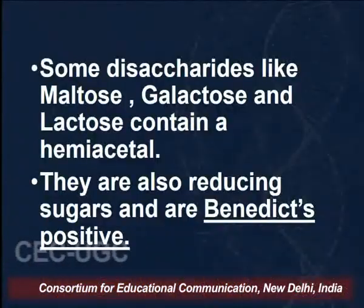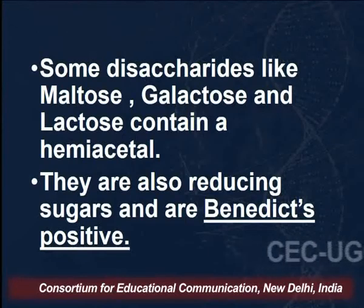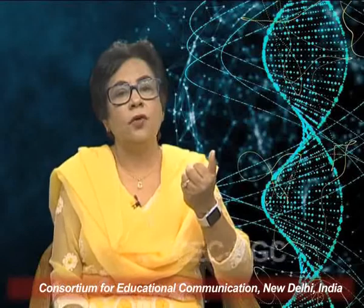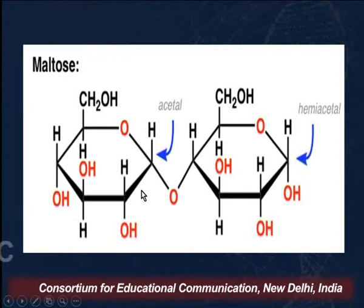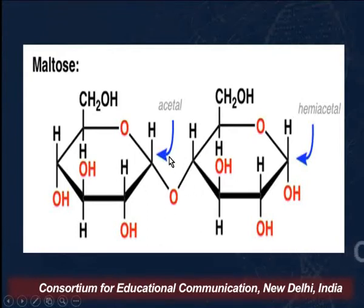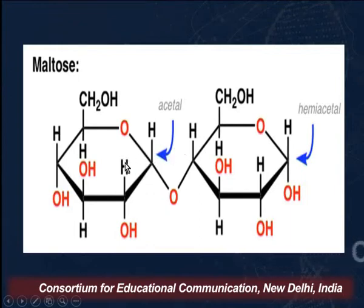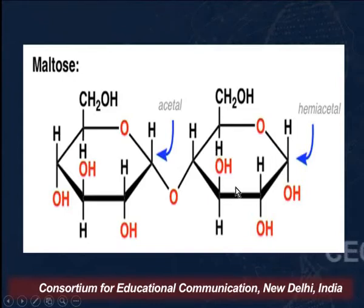Some disaccharides like maltose and lactose also contain a hemiacetal unit and are therefore reducing sugars — they give a positive test with Benedict's reagent, Fehling's reagent, and Tollens' reagent. Looking at the structure of maltose, which is a disaccharide of alpha-D-glucose: the anomeric carbon of the first unit is attached to an oxygen in an acetal linkage and since it is existing as an acetal, it cannot open up in basic medium — it is stable and locked. However, looking at the second unit, this unit is existing as a hemiacetal.